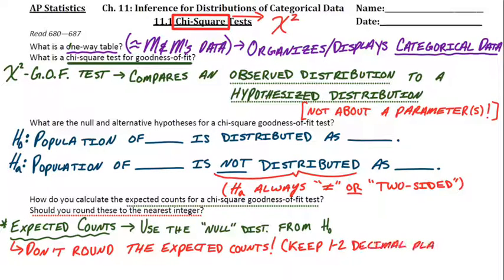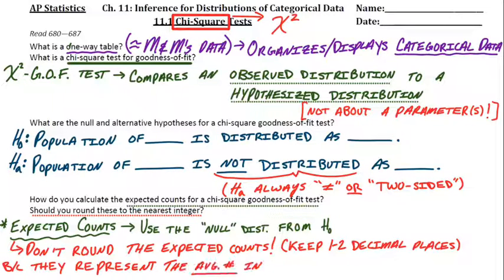You can keep at least one, maybe two decimal places. That's a common mistake among AP stat students. They think they need to round it to the nearest integer. Don't. The reason we don't round those expected counts, they actually represent an average. We can say because they represent the average number in each category if we did repeated samples. So just remember, don't round those expected counts to the nearest integer. Keep at least one or two decimal places.